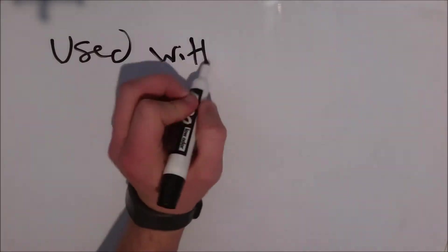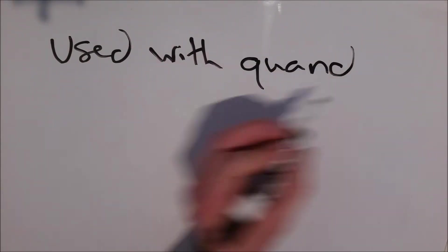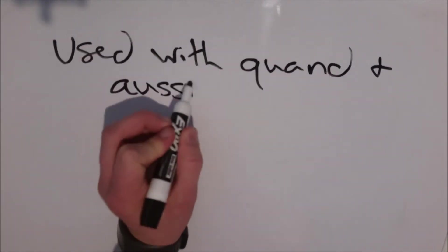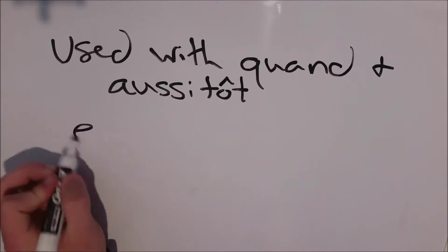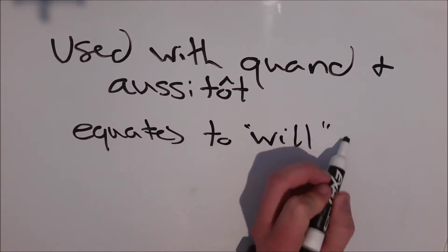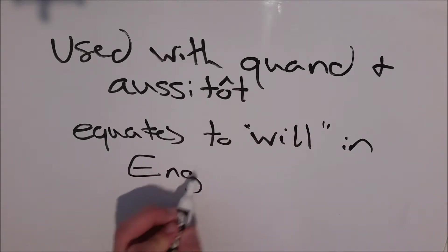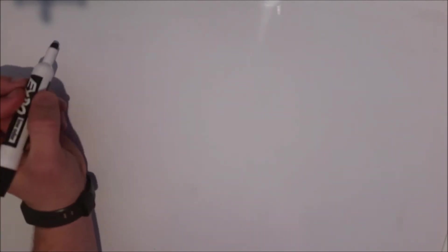So let's look at some of the different times we want to use it. One of the things that's different in French from English, is we want to use it with quand and aussitôt, instead of the present tense, which is what English would usually use. We usually want to use the future simple tense in French when we would use the word will in English. I will go to the mall. I will see my friends.